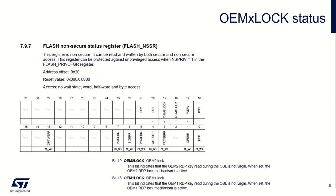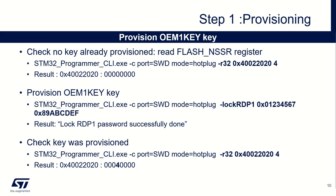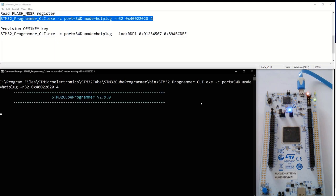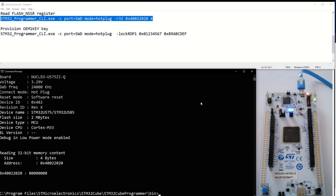Let's start with key provisioning. To check if our device has already been provisioned, we can check the OEM block bit in the flash NSSA register — this is an extract from the reference manual of the U5. If I check the flash NSSA register, I should have 0, meaning no OEM keys are there. Everything is 0, meaning bits 18 and 19 are 0 — no OEM key has been provisioned yet.